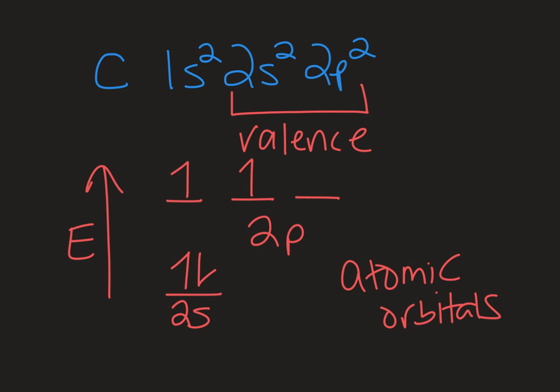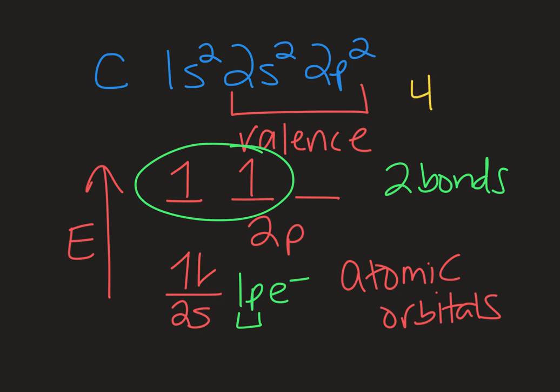If we think about each atom bringing an electron, there are only two unpaired electrons with the atomic orbitals of carbon, meaning that I would expect carbon to only make two bonds if I was just looking at its atomic orbitals, and then it would have one lone pair of electrons. That would be in a 2s orbital. But we know that carbon makes four bonds, not two. So something else must be going on.